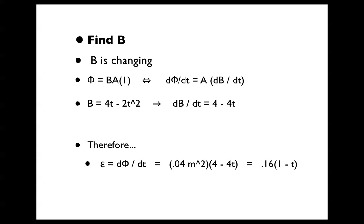First off, we find B, and B is changing, so that's the part of the equation that we'll take the derivative of. Phi equals the magnetic field times the area times 1, because the magnetic field is perpendicular to the loop, making the cosine of 90 equal to 1.